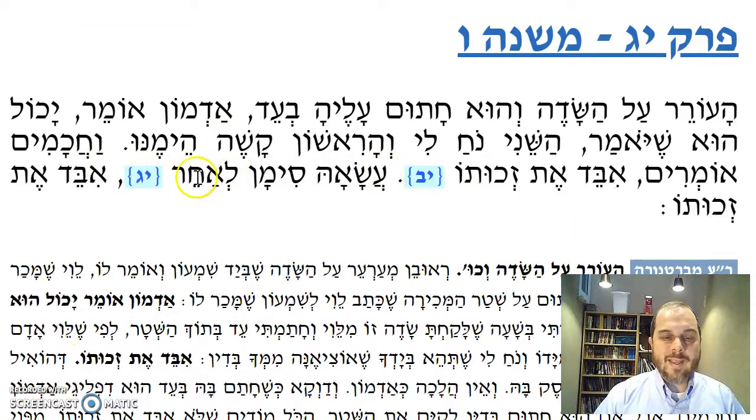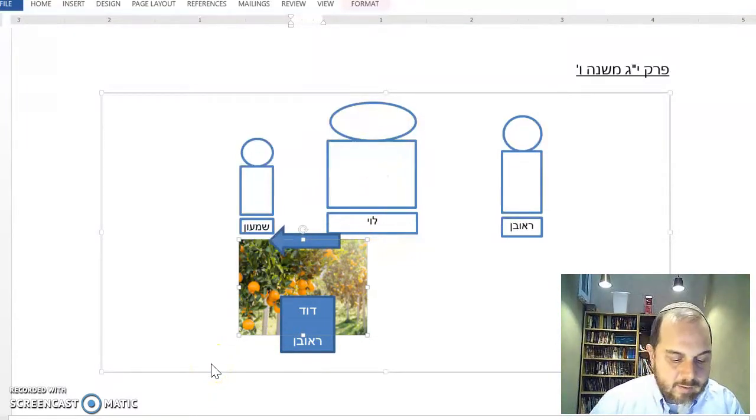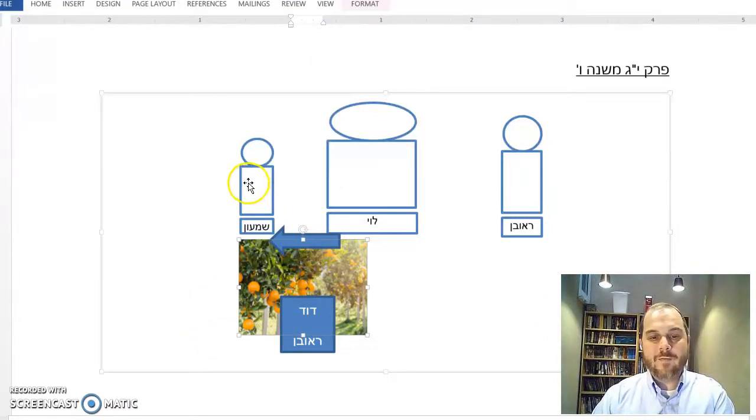Asa siman l'acher means if he sold the adjacent field - he sold the field next to this field and said, by the way, one of the borders is Levi's. He mentions this as Levi's field. I'm signing on the border, and he makes this field a siman for another field. The Kahati explains: in the simanim, he mentions that it's Levi's field.